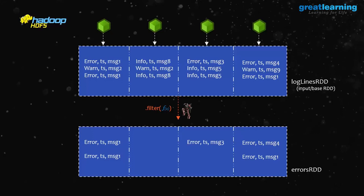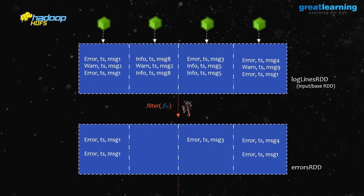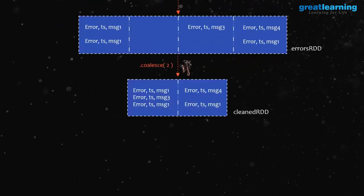If you have YARN dynamic allocation enabled, the previous RDD will be released. But there's another problem: a partition with no data still has an executor running on it. For example, after filtering, one executor may have no error data to process and will sit idle. You have four executors but one data node has an executor with no data — it just sits idle. How do you solve this?